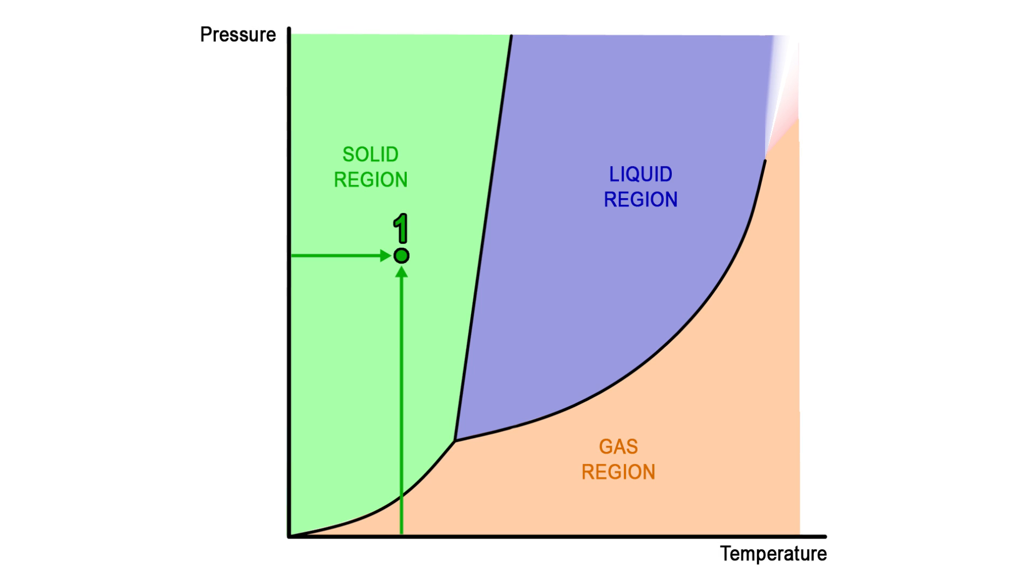Note that the pressure and temperature values for point one would make the substance a solid, point two a liquid, and point three a gas.